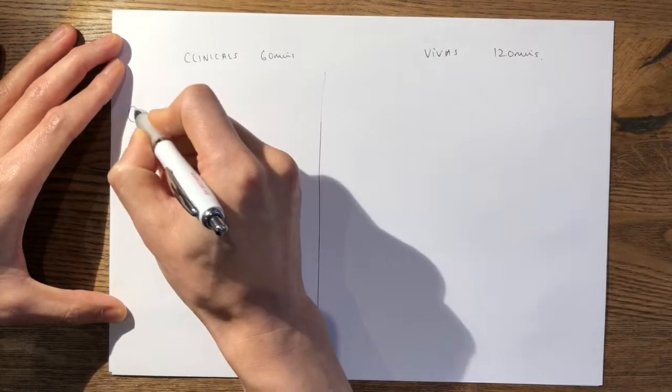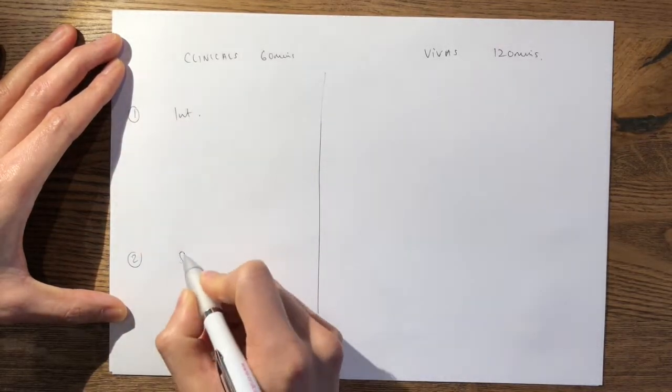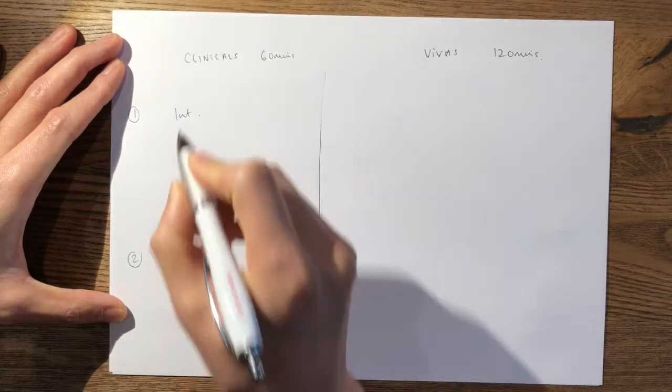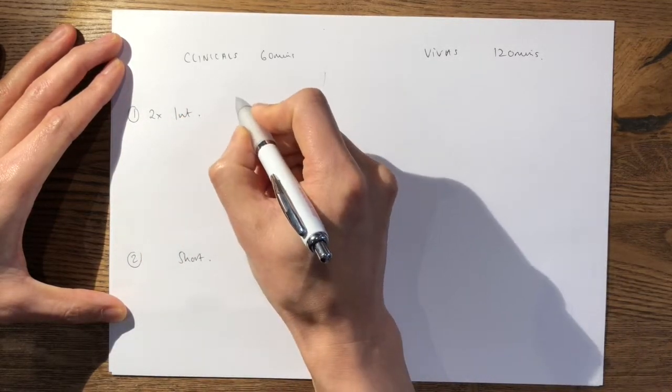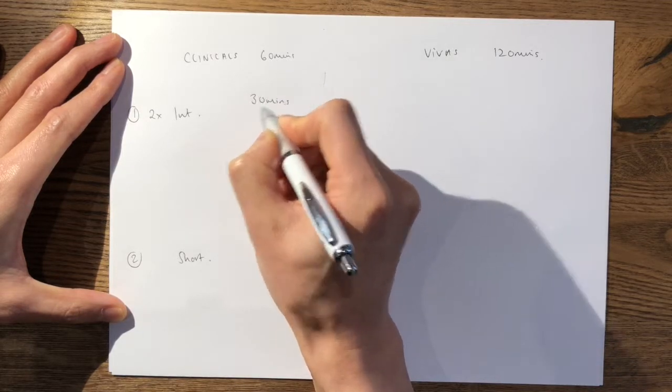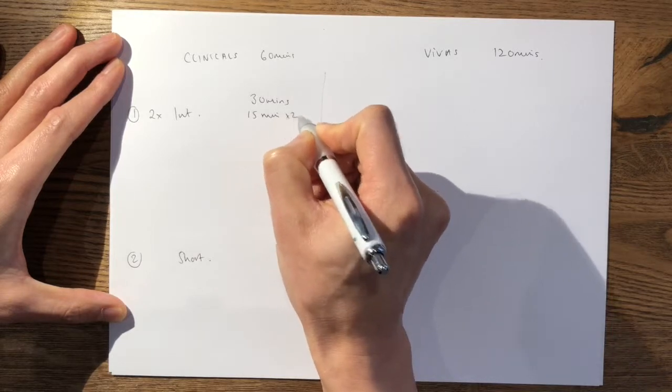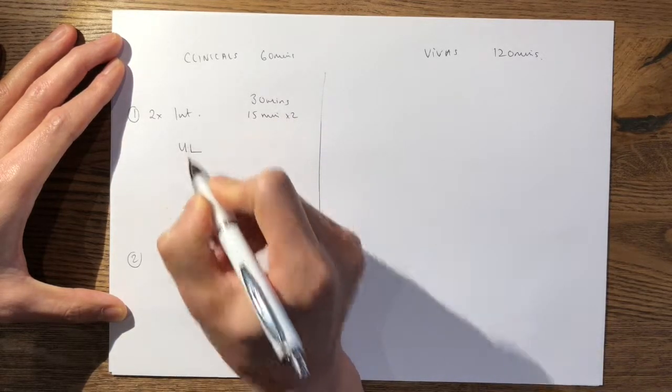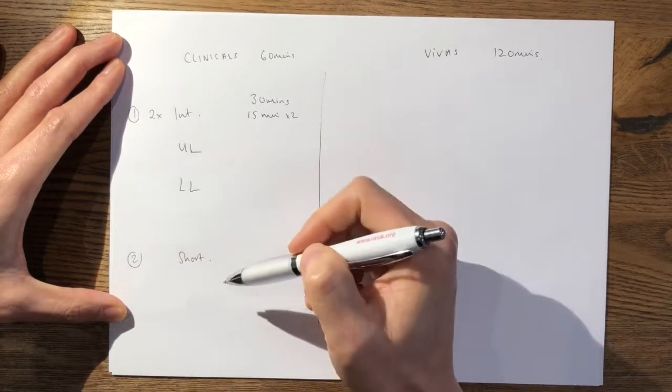Your clinicals are largely divided up into your intermediate cases and your short cases. Your intermediate cases, you have two of and they are 30 minutes total, so 15 minutes each, and you have one upper limb intermediate and one lower limb intermediate, and spines can crop up in either one of those.